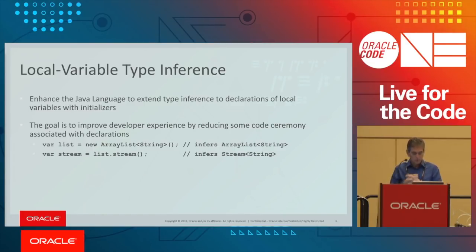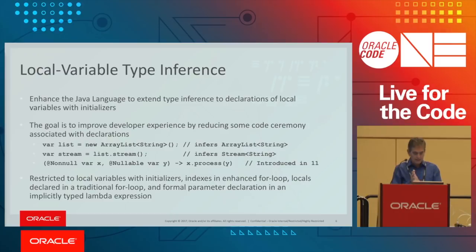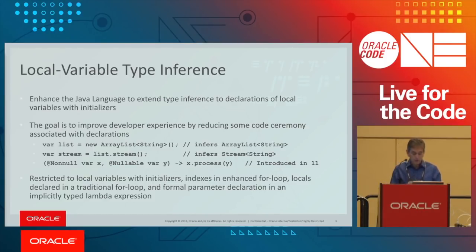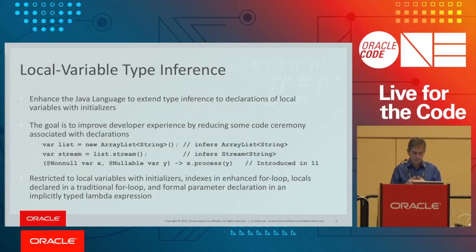As an example, you can initialize a list with a constructor call to ArrayList of String. Instead of mentioning the full type name on the left-hand side, you can use var and it will infer the type from the right-hand side. When initializing with a method call, the inferred type is the method's return type — in this case, Stream of String. We also allow var in formal parameter declarations for implicitly typed lambda expressions, mainly so you can use annotations, since you cannot use annotations without a type.